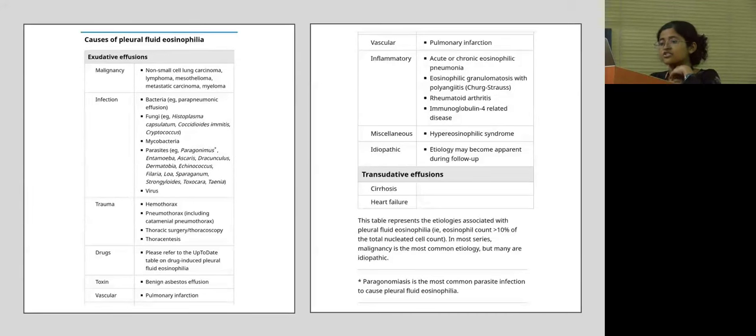Other causes such as trauma, which can cause hemothorax, pneumothorax, thoracic surgery, thoracocentesis have also known to cause pleural fluid eosinophils. Here, to highlight, it is not always necessary that pleural fluid eosinophils are associated with the peripheral fluid eosinophils. For example, in hemothorax, a peripheral fluid eosinophilia might occur only 10 to 15 days after the onset of development of fluid eosinophilia.